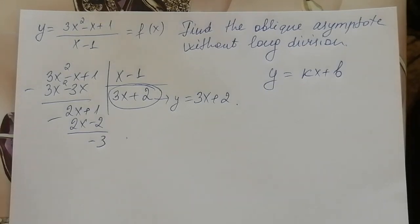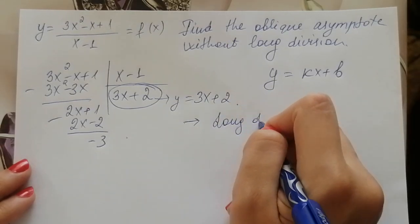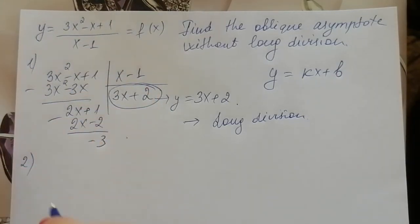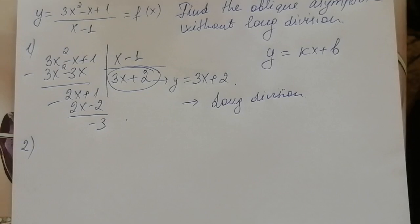But there's another way to find the oblique asymptote without long division. This first method is long division and the second method I'm going to show you. It takes a little bit more time but finding it is so easy.